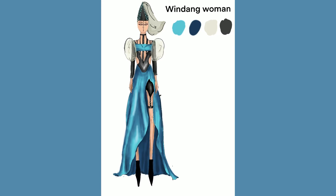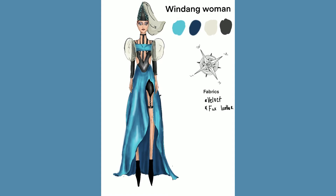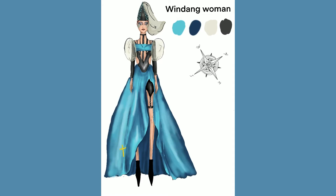The 'Hennin' hat — a headdress with a cone shape — was worn by women of nobility during the medieval period. Did you know that wearing a higher hat symbolizes more power? She's that girl.